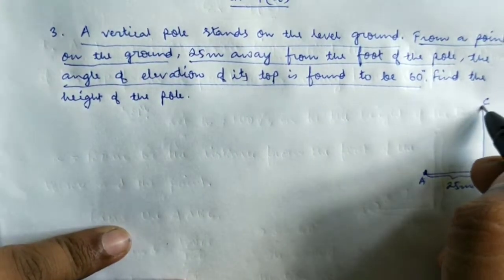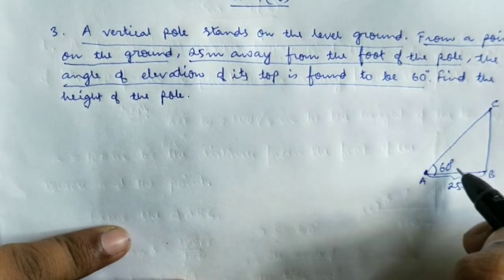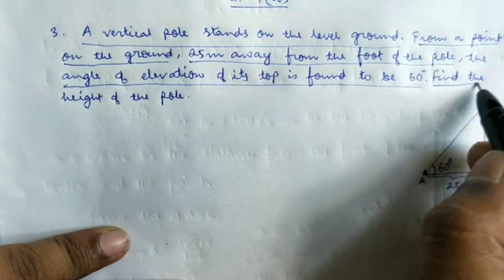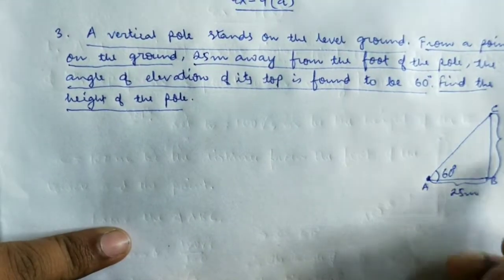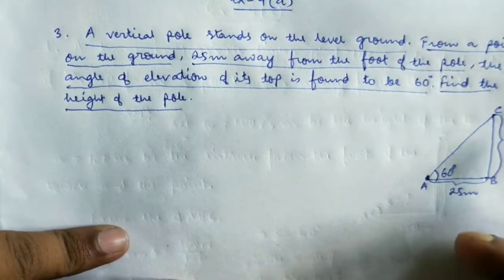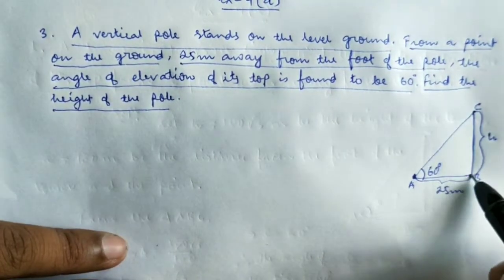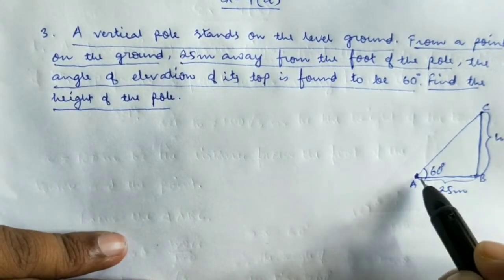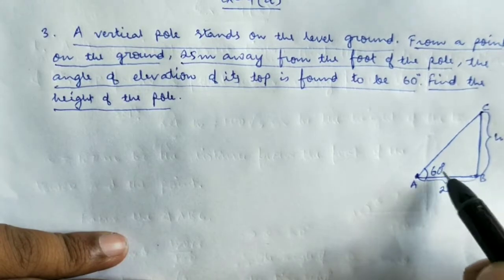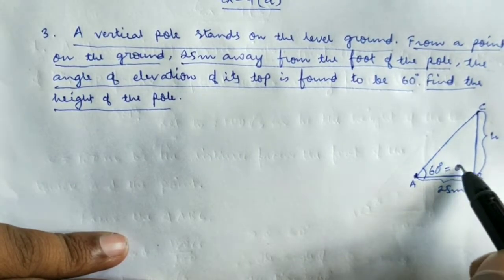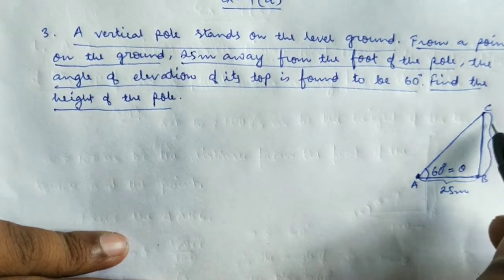The angle of elevation from point A to the top of the pole is 60 degrees. We need to find the height of the pole. If we consider this height as H, then we need to find the value of H. From the diagram, we can see that H is the unknown and the base AB is 25 meters.